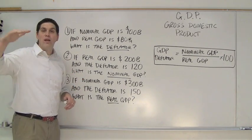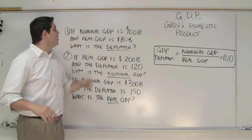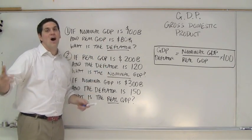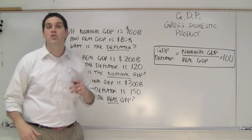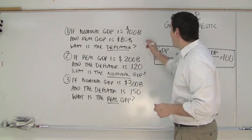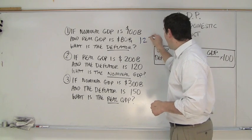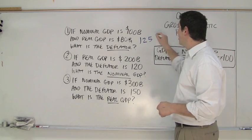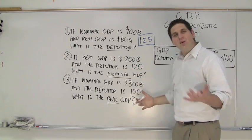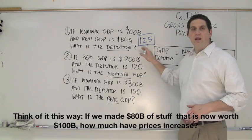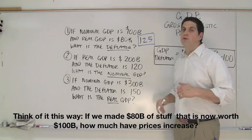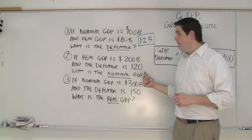Prices have increased since the base year by $20 billion. $20 billion is what percent of $80 billion? The answer is 25% — $20 billion is one fourth of $80 billion. That means the GDP deflator is 125. The GDP deflator is telling you how much prices have changed since the base year — prices have gone up 25%.